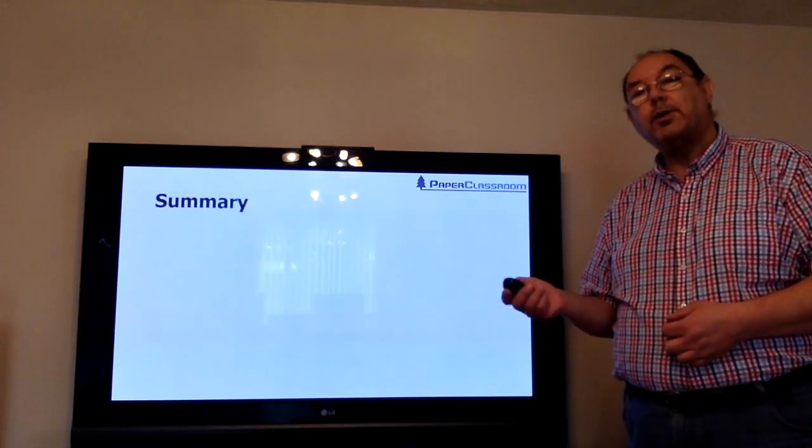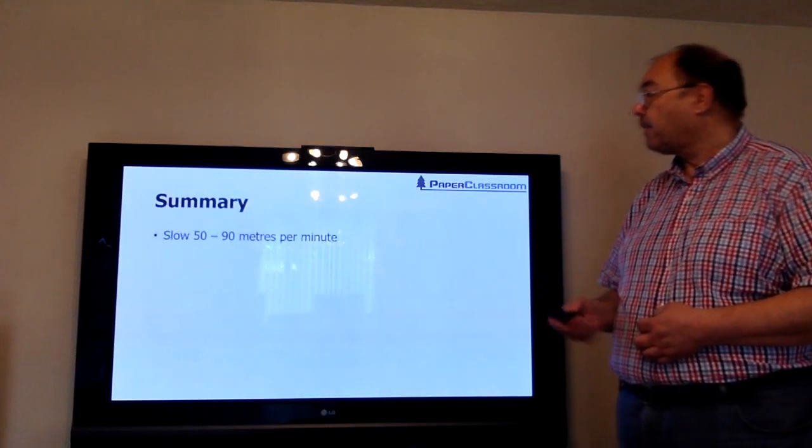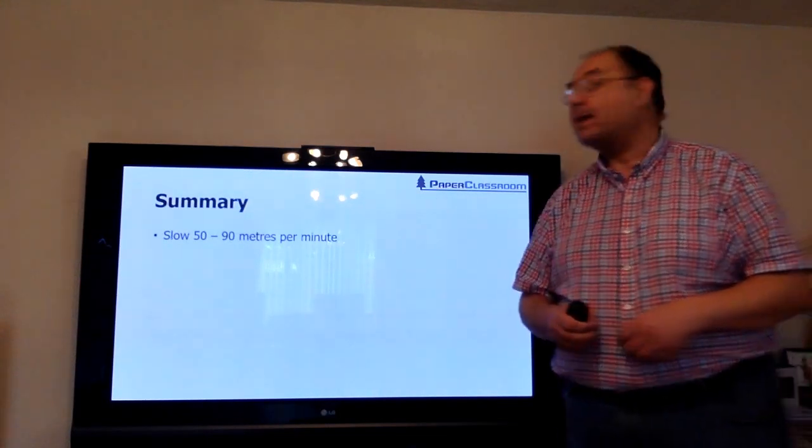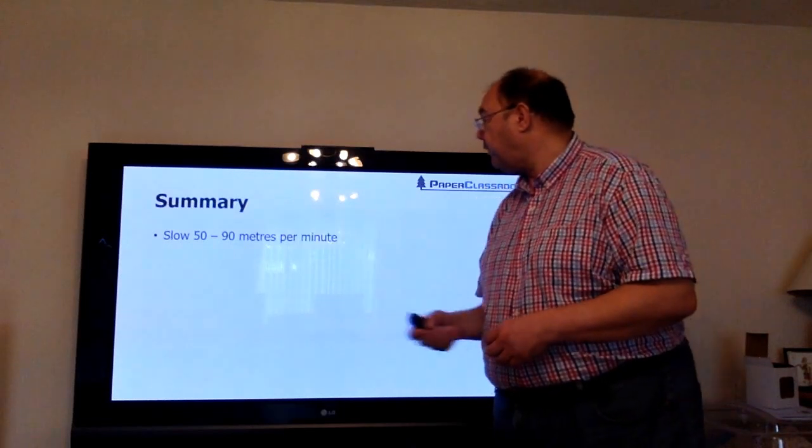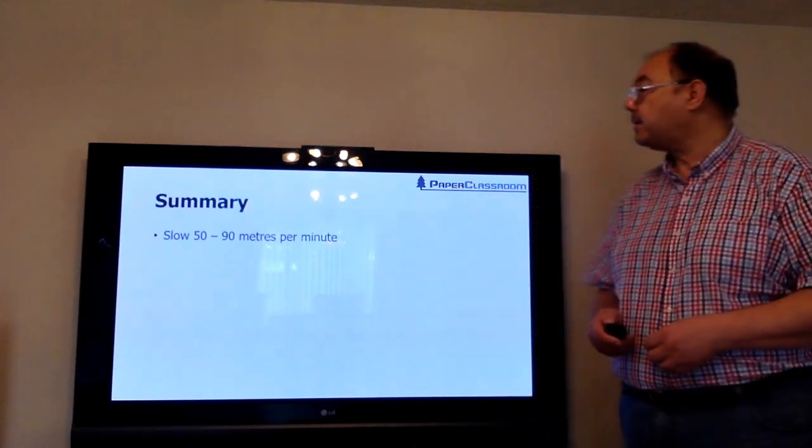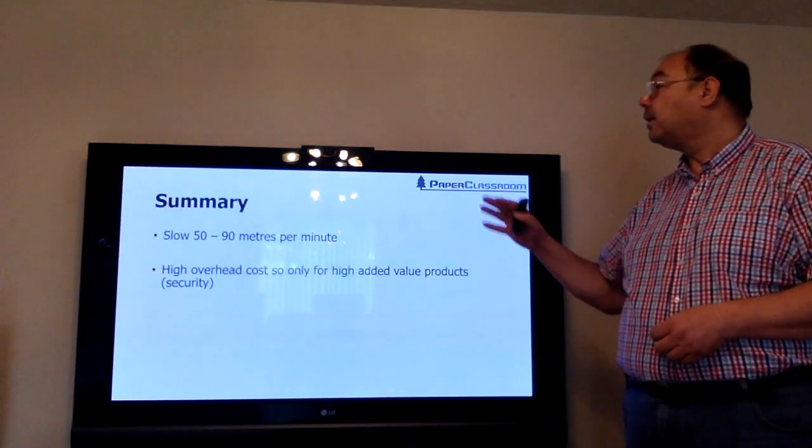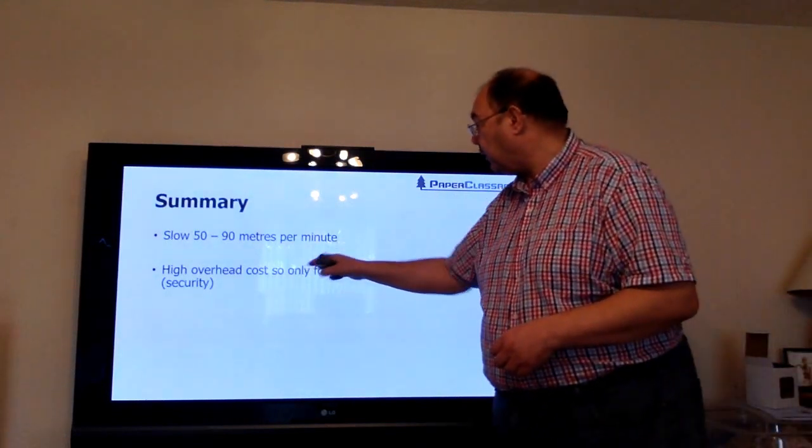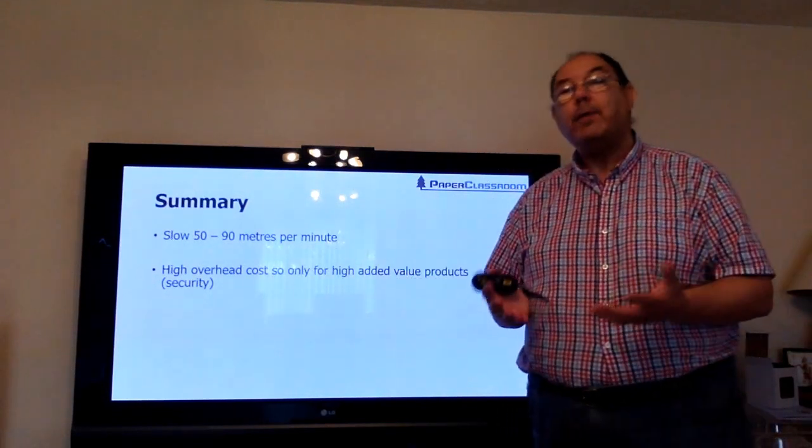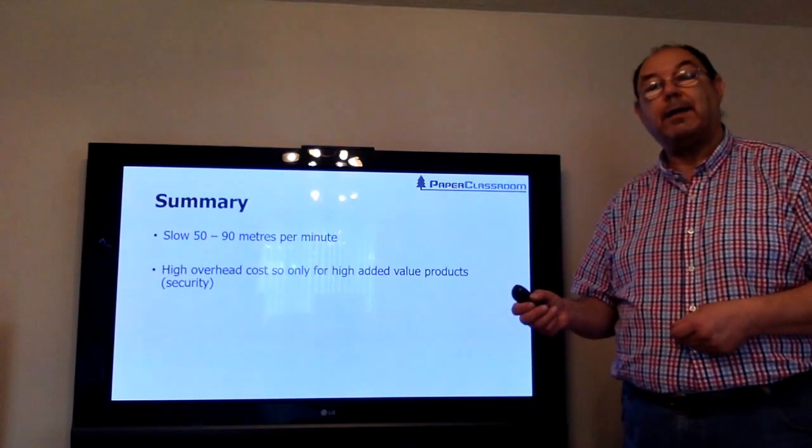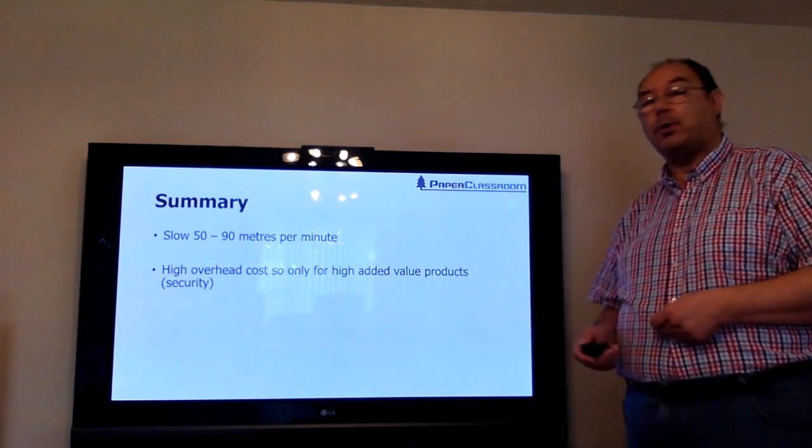So a quick summary of this tutorial. Vat machines typically are very slow, between 50 and 90 meters per minute. Because they're so slow they have a very high overhead cost, so you can only really use it for high added value products such as security papers.